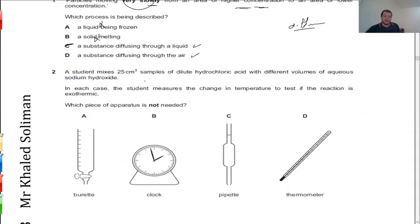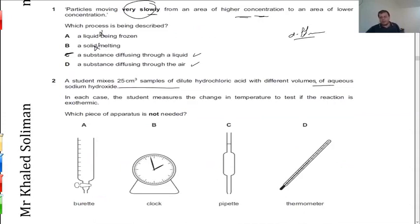A student mixes 25 cm³ of hydrochloric acid with different volumes of aqueous sodium hydroxide. To measure 25 cm³ accurately you need a pipette. To add varying volumes you need a burette. In each case the student measures the change in temperature — you need a thermometer. The question asks which apparatus is not needed — a stopwatch for measuring time is not needed in this experiment.